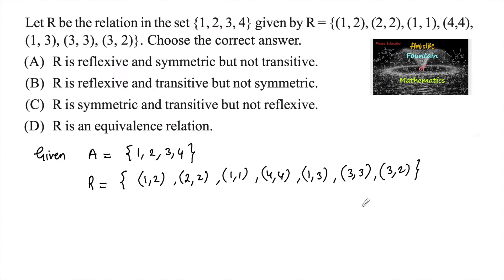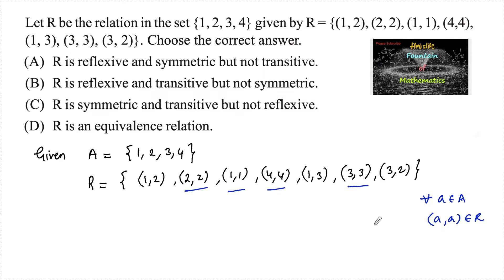Now let's check the reflexive condition: for every a belonging to A, (a, a) must belong to R. Here, (1,1), (2,2), (3,3), and (4,4) are all present in R. So relation R is reflexive. Since R is reflexive, we can rule out option C.